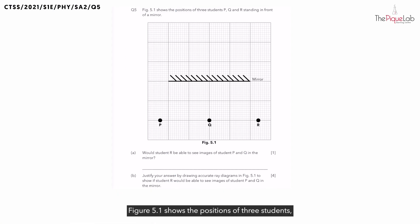Question 5. Figure 5.1 shows the positions of three students P, Q and R standing in front of a mirror. And we're supposed to check if student R can see the images of student P and Q in the mirror.